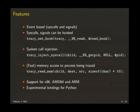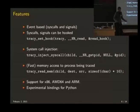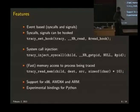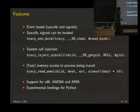Our library is event-based, so you can tell the library to notify you when, say, getpid is used and call a specific function, then you can execute whatever you want in that function. The same goes for signals. You can inject system calls when a process is suspended, and you can read and write memory — quickly most of the time, depending on what your kernel implements. We have support for both Intel architectures and ARM, and we have some bindings for Python, although everything is written in C.